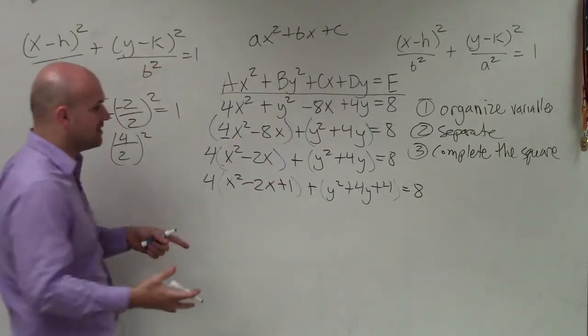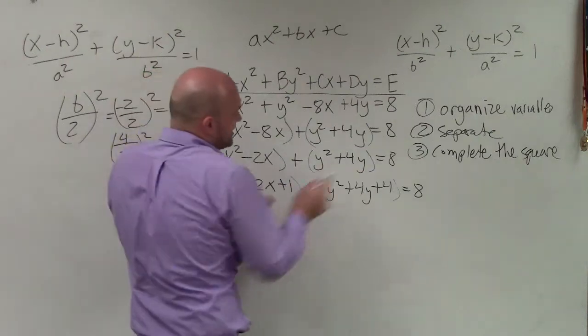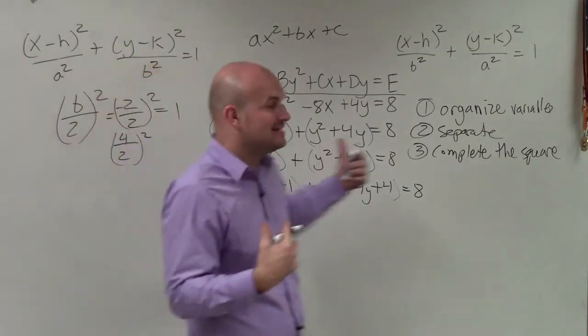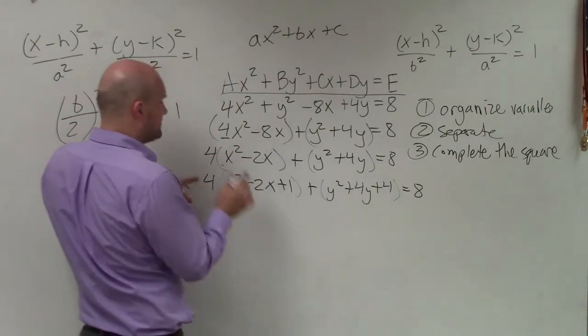Now, the next step I need to do is notice, I added, this is an equation, right? I added a 1 and I added a 4 on the left side. Therefore, I need to add those values to the right side to make the equation still true. But there's one little caveat that we have is, remember,